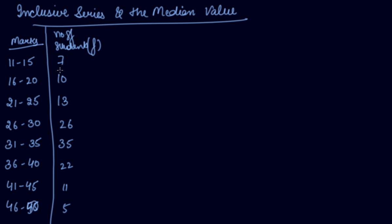Now first what you will do, you will convert the inclusive series into exclusive series. How we used to make the exclusive series? We used to find out the difference between the upper limit of the first class interval and the lower limit. So the difference between 16 and 15 is 1. We divide 1 by 2 which is 0.5. So we add 0.5 to the upper limit and subtract 0.5 from the lower limit.